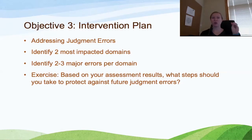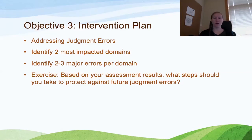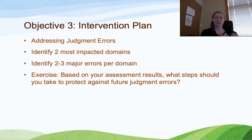We choose one to two most impacted domains, and then within each of those domains, we identify one, two, or three subdomains or sub-areas that are most highly impacted to prioritize for treatment. The exercise for this objective asks you to do just that: based on your assessment results, use this formula to pick out the most highly impacted areas and then develop a plan to protect yourself against future judgment errors related to those issues.